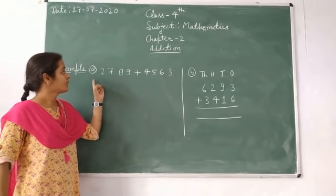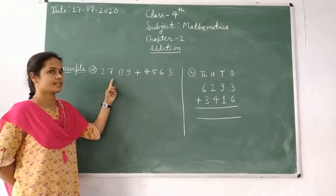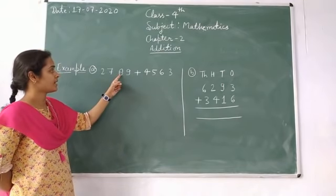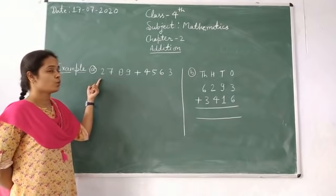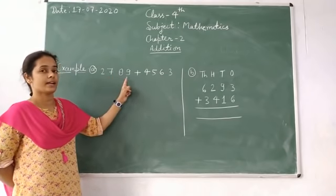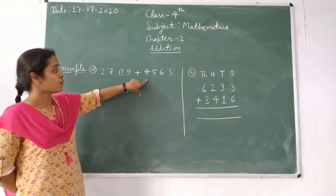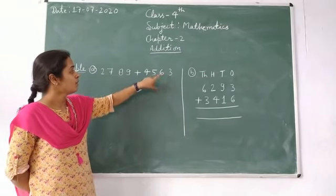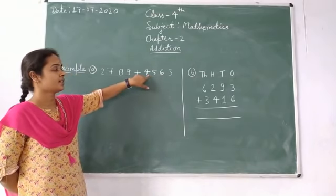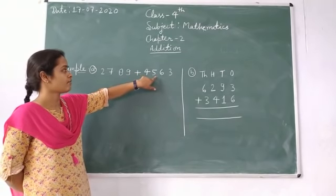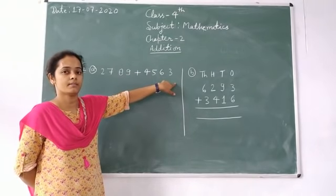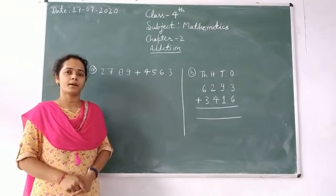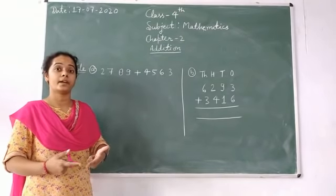Example A, first one: two thousand seven hundred and eighty-nine. The number has ones, tens, hundreds, thousands. Two thousand seven hundred eighty-nine, plus four thousand five hundred sixty-three. Four thousand five hundred and sixty-three. Now, write both the numbers in column, then we add.